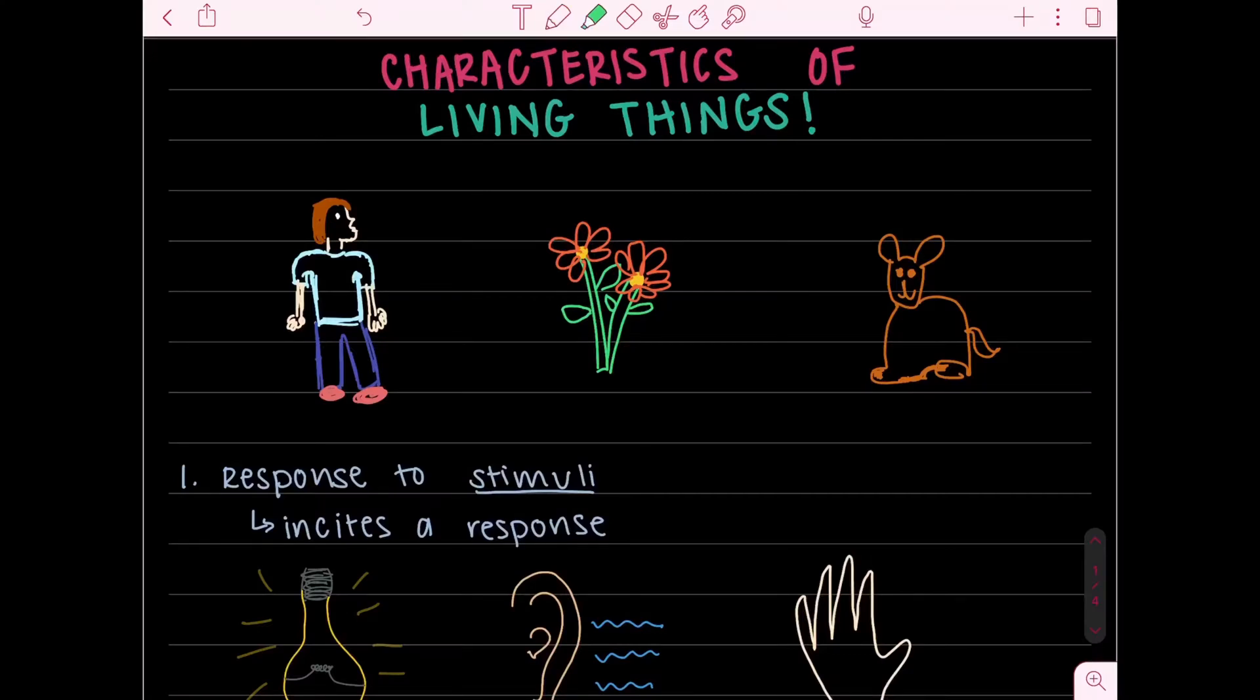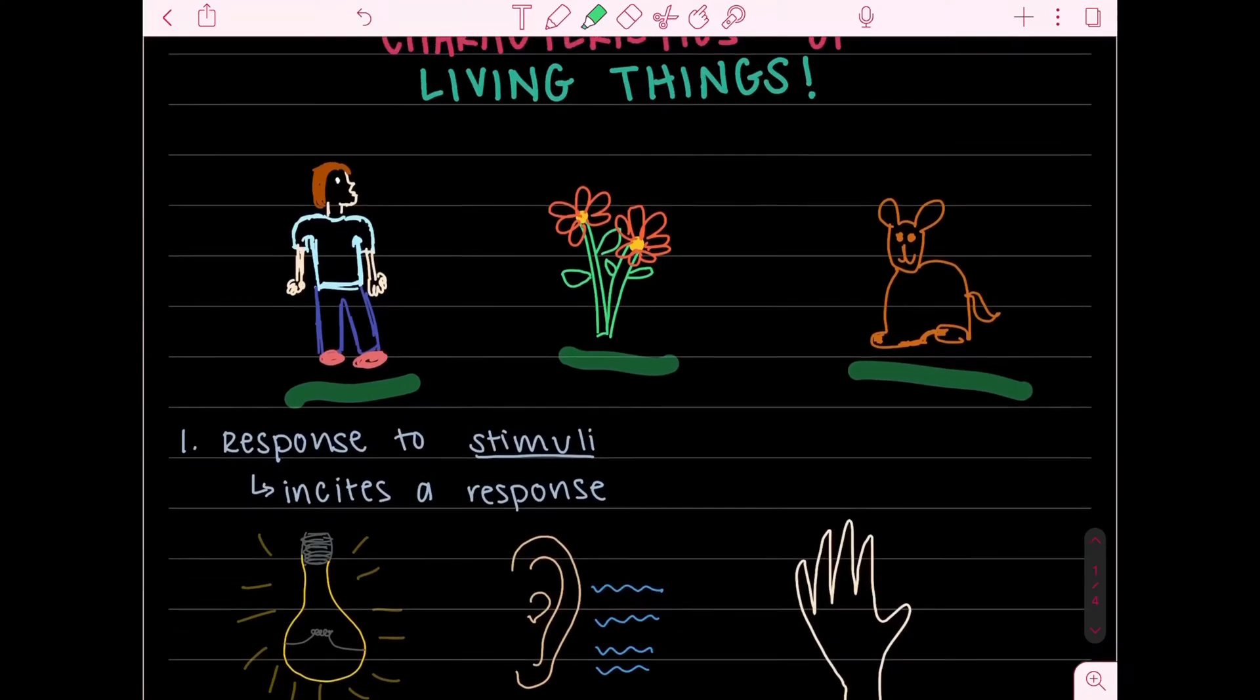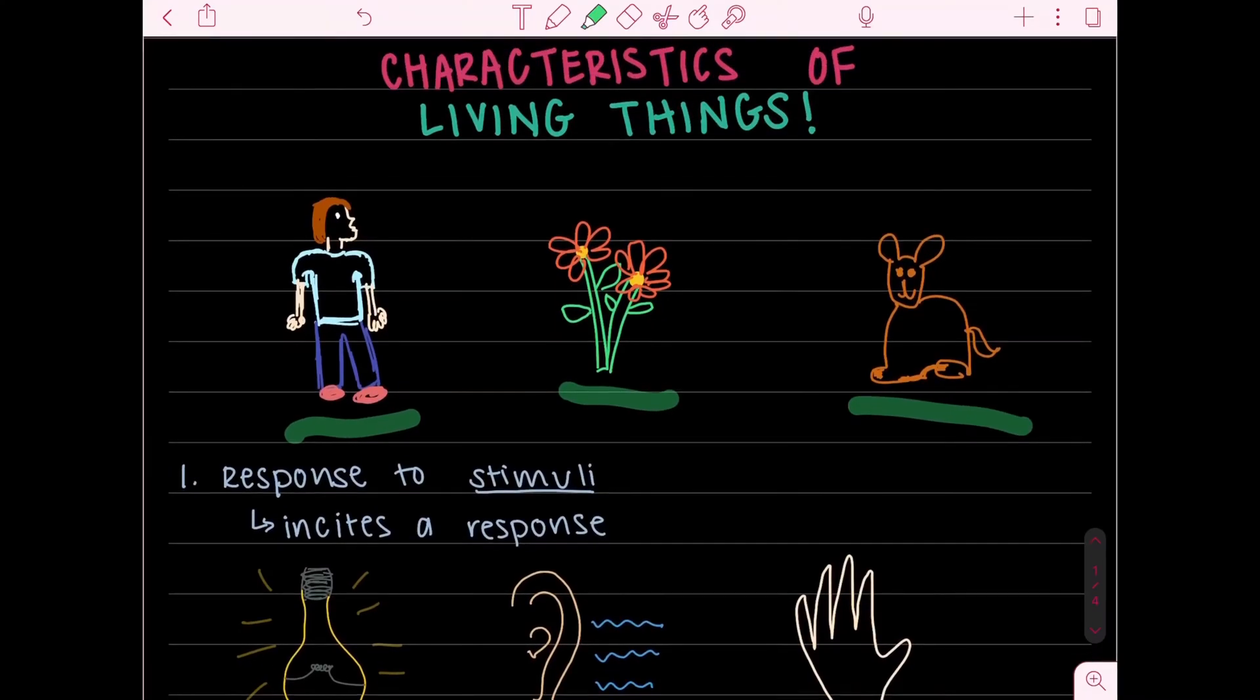Hello everyone and welcome back to another video. Today will also be a science video and we're going to be talking about the characteristics of living things. Living things range from us humans to plants to animals, and as we go through this video I'll do my best to provide you guys with multiple examples for each single characteristic as we go down the list.